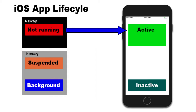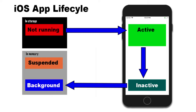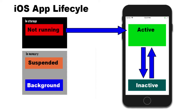We can interact with it. Sometimes, though, an event may occur that moves that active state into an inactive state, such as when we get a phone call on an iPhone. The phone call takes precedence. That app becomes inactive for a few seconds and then moves into the background state while we're taking that phone call. But if we choose not to answer, the app will move back into the active state.